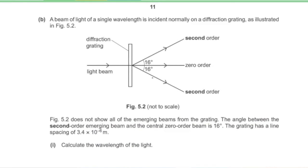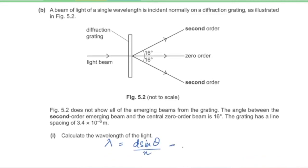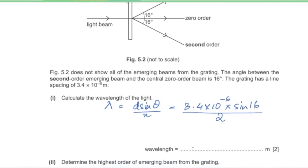Part B. A beam of light of single wavelength is incident normally on a diffraction grating. The angle between the second order beam and the central zero order beam is 16 degrees. The grating has a line spacing of 3.4 × 10⁻⁶ meters. Using λ = d sinθ / n: λ = 3.4 × 10⁻⁶ × sin16° / 2 = 4.69 × 10⁻⁷ meters.